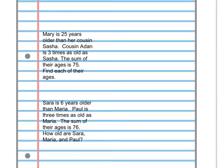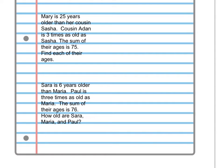I'm going to go ahead with the bottom one because I think that one's probably the most complicated. So if you can follow along with the bottom one, you should be able to do the top two. So it says here: Sarah is six years older than Maria. Paul is three times as old as Maria. The sum of their ages is 76. How old are Sarah, Maria, and Paul? So it sounds like we have three people and we've got to find three different ages. There's going to be three answers to this problem. The best way to solve this problem is to find the person that is the youngest, and then we use their age as a variable to decide how to write the other two ages.